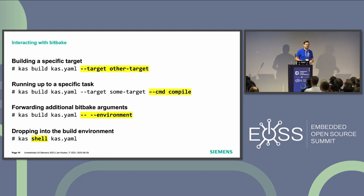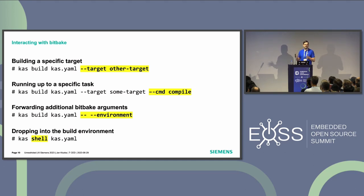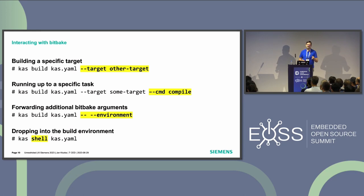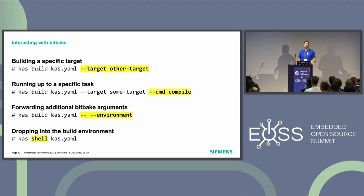How do you interact with BitBake? We are wrapping it. Normally you specify with one file what you want to build and that's done. If you have variations, you can overwrite on the fly and say you want to build another target, or run specific tasks. You can also pass forward commands like getting the full environment to BitBake directly. Or if you really don't like all the wrapping, you just say 'cas shell' and you're in the environment where you can natively interact with BitBake or other Yocto ecosystem tools.